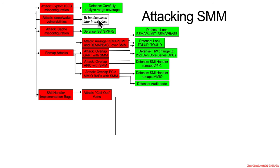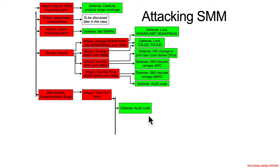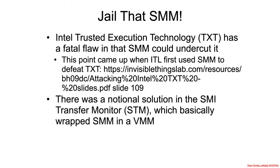I'm going to introduce a common bus here for different defensive capabilities that apply to different SMI handler implementation bugs. The first one is just audit the code - auditing the code should be able to find these kinds of vulnerabilities. One of the oldest capabilities to try to deal with SMM exploits was a thing called SMI Transfer Monitor.